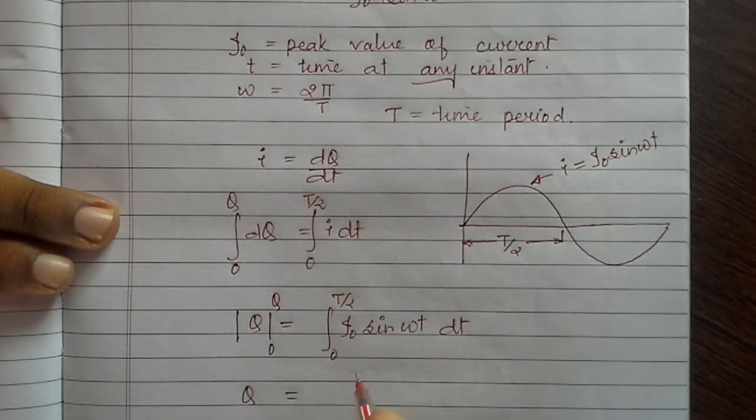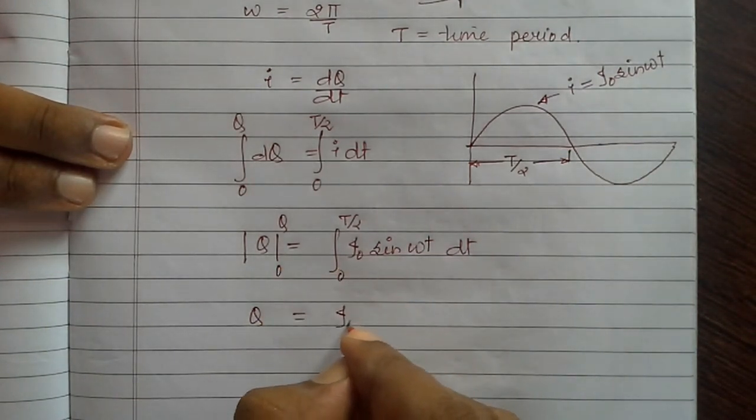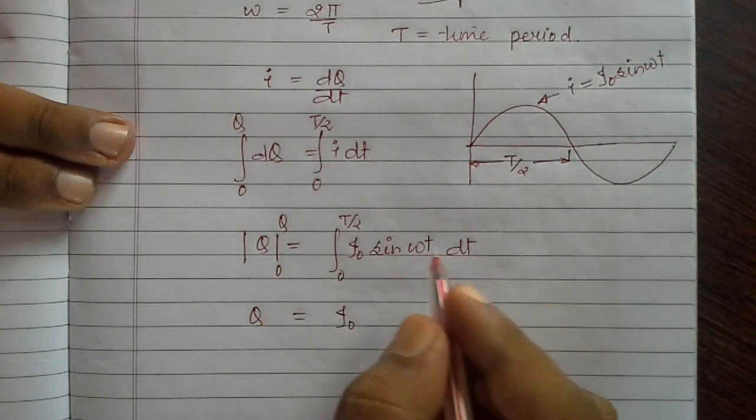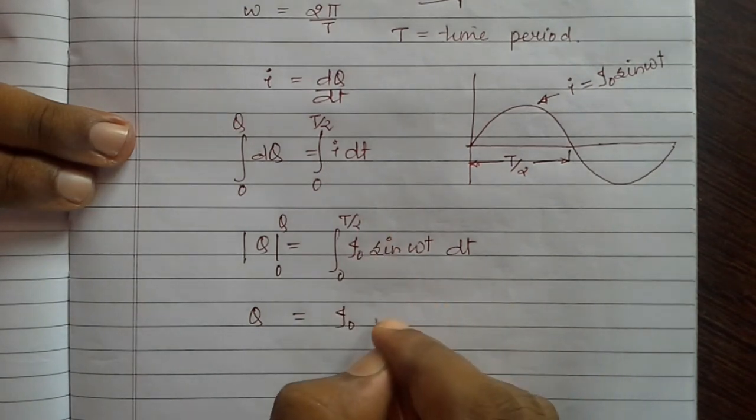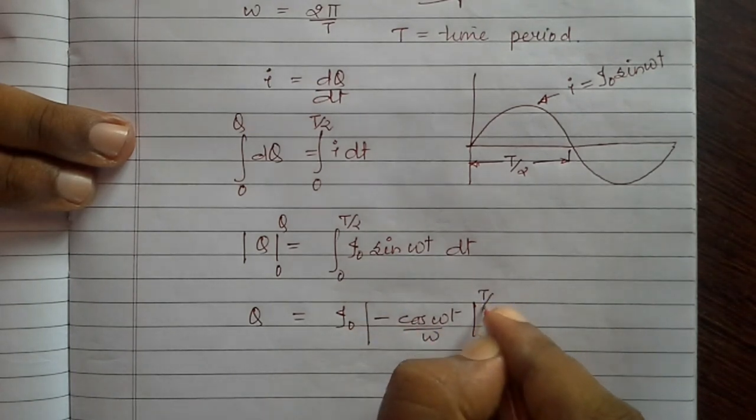q is equal to i0 sin omega t integration from 0 to T by 2. That will be equal to i0 times minus cos omega t by omega, varying from 0 to T by 2.